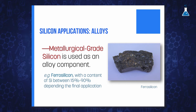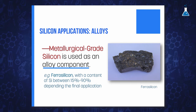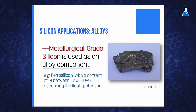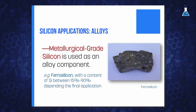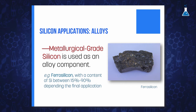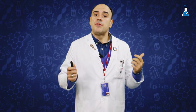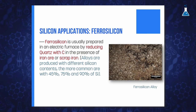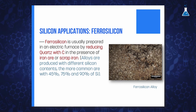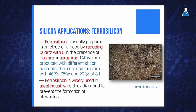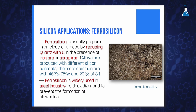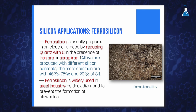Another important application of silicon is as an alloy component. For this purpose, elemental silicon obtained from metallurgical processes, or MG silicon, is employed. For example, ferrosilicon is an important alloy of iron and silicon in varying proportions, with a silicon content ranging from 15 to 90%. Ferrosilicon is usually prepared in an electric furnace by reducing quartz with coke in the presence of iron ore or scrap iron. It is widely used in the steel industry as a deoxidizer and to prevent the formation of blowholes.